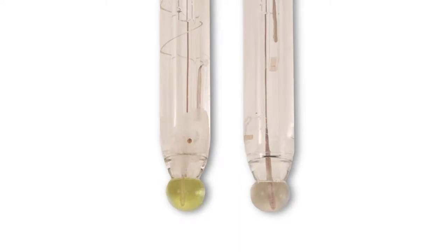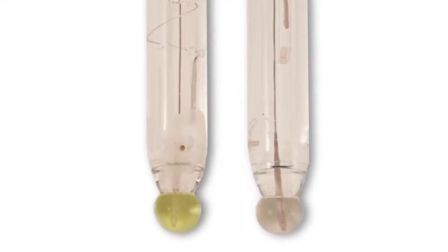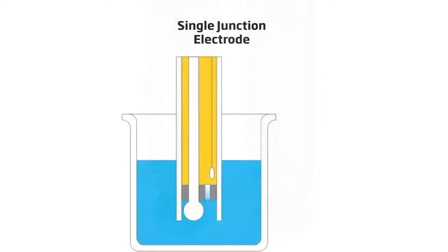Hanna Instruments manufactures single and double junction pH electrodes. In single junction electrodes, the silver-silver chloride reference wire is surrounded by a 3.5 molar KCl solution with silver chloride.